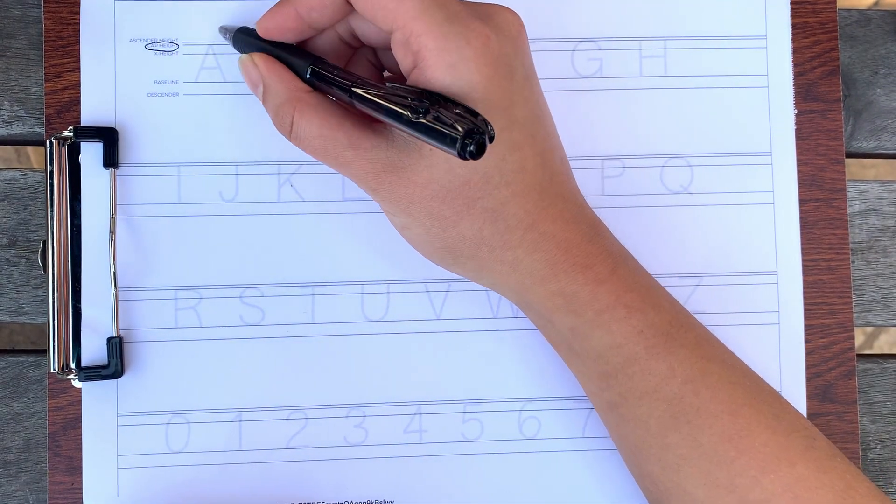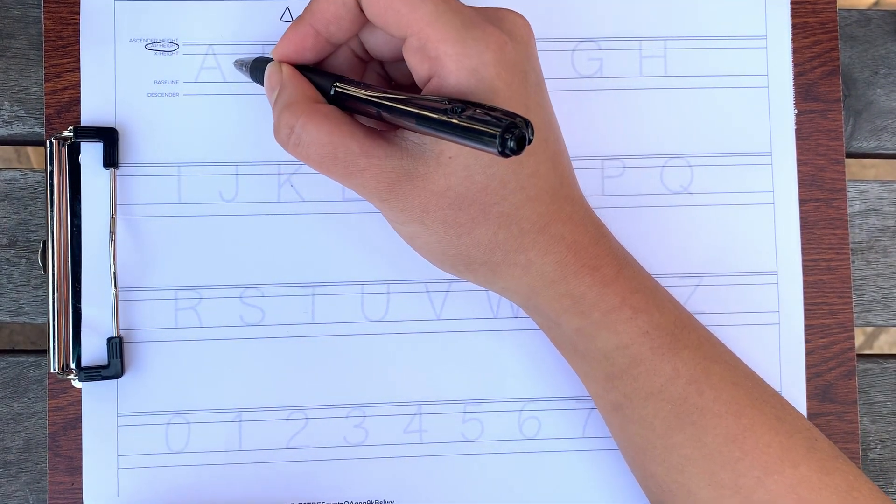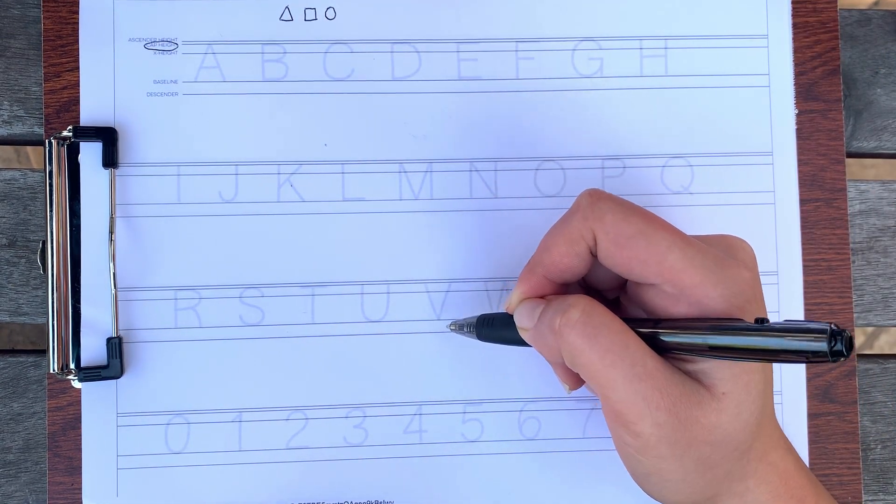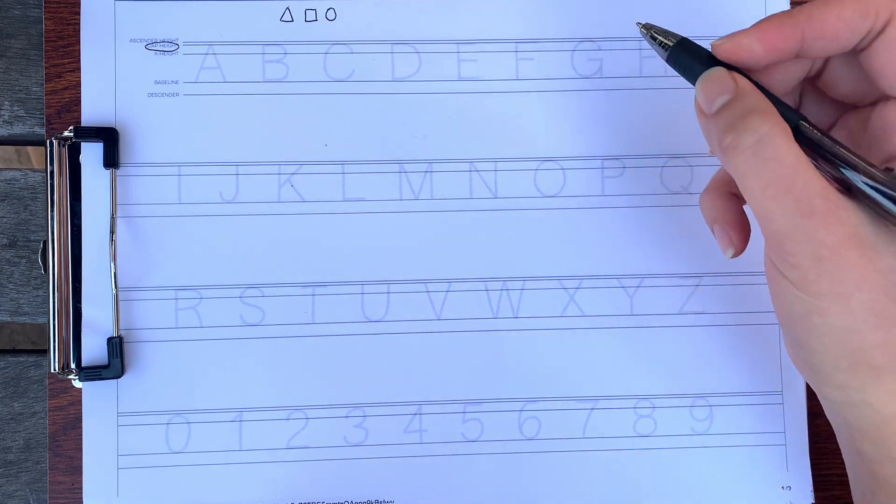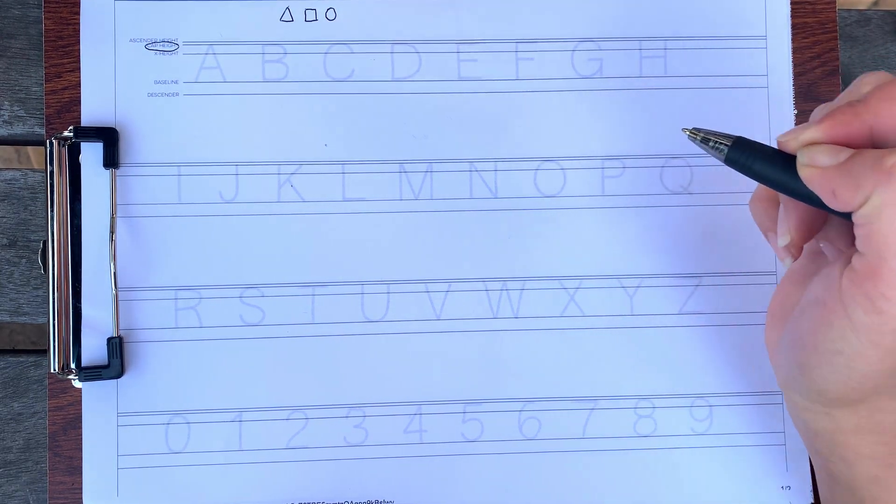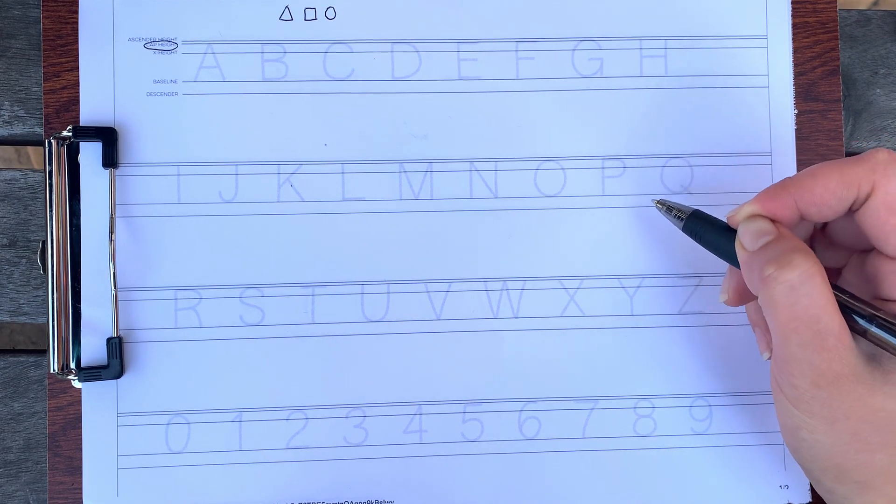For example, we need to push up the tip of the A and lower the bottom of the V in order for these letters to appear consistent with the others. Same thing for the circle type of shapes like O or Q. The tops and bottoms of these letters have to go slightly over the normal lines.